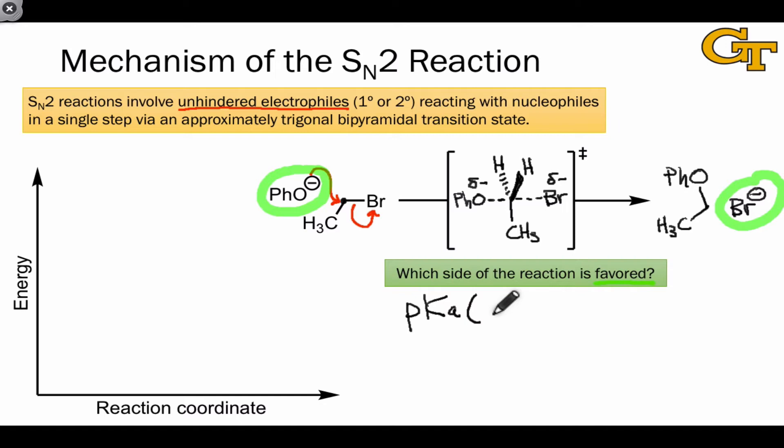In this particular case, the pKa's of the corresponding conjugate acids are highly informative. The pKa of phenol, the conjugate acid of phenoxide, is about 10. And the pKa of HBr, which we're vaguely familiar with from studies of strong acids, is somewhere well below zero.